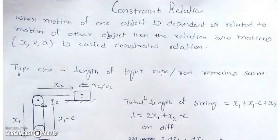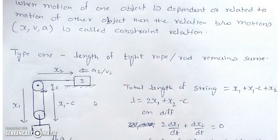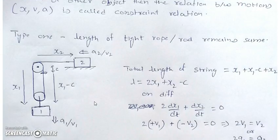In this video we will be studying constraint relations. If the motion of one object is dependent on or related to the motion of another object — for example, if one moves by some distance, the other has to move by a particular amount — then the relation between their motions, whether displacement, velocity, or acceleration, is called a constraint relation. Let's start with Type 1, which is based on the length of a string, rope, or rod remaining constant.